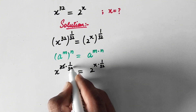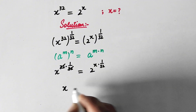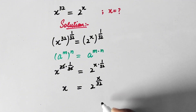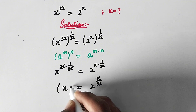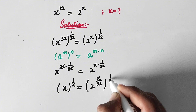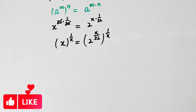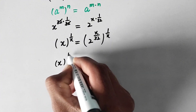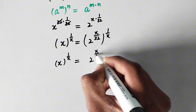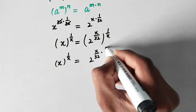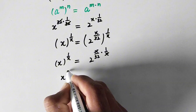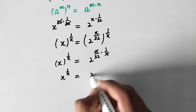So here the 32 will be cancelled by this 32 and we get x is equal to 2 to the power x over 32. Now we will take the power of 1 over x on both sides. This x will be cancelled by this x, giving us x to the power 1 over x is equal to 2 to the power 1 over 32.